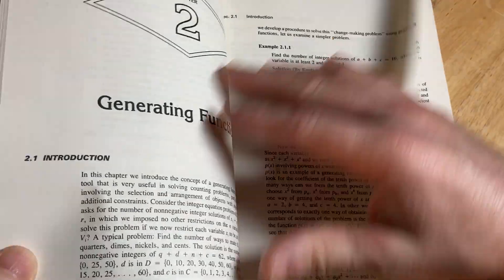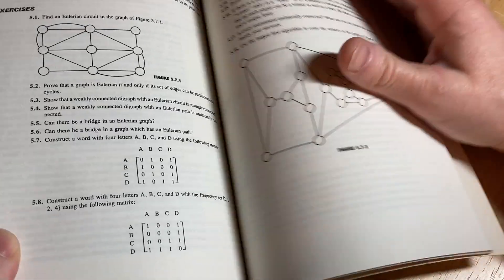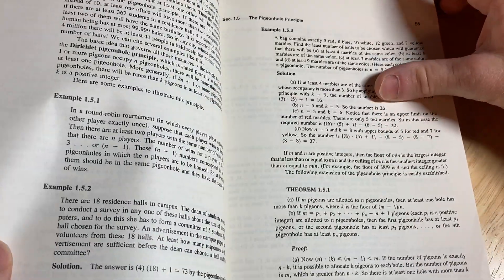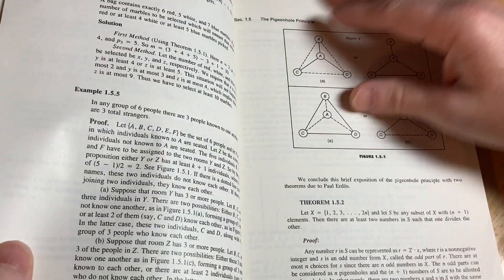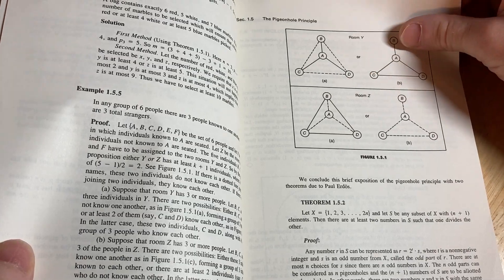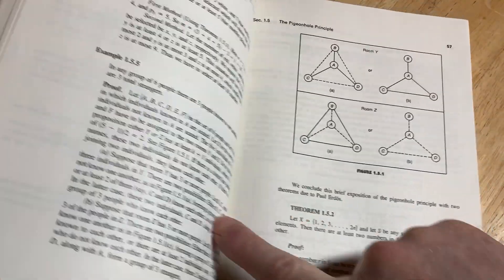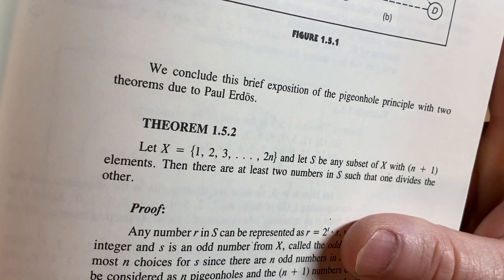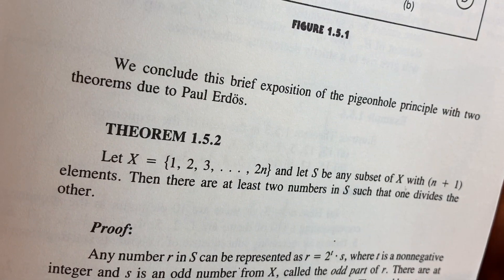It's got some cool stuff. You see some cool mathematics in here. I think there was a proof in here due to Erdős. I'm pretty sure this is the book I was reading. Let's see if I can find it. There was some argument here I was reading about. Here we go. We conclude this brief exposition of the pigeonhole principle with two theorems due to Paul Erdős. These theorems are due to Erdős.